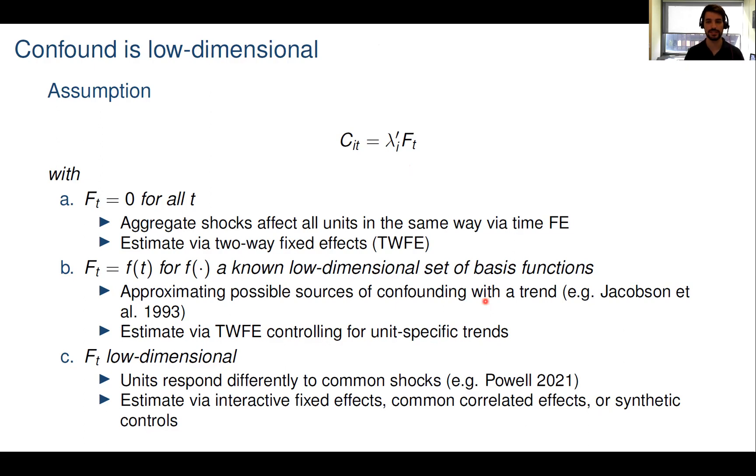Now in case B, we relax this condition and allow the aggregate factors to affect different units differently. But instead, we require the factors to have a known functional form. For example, we may assume that they follow a linear trend. In that case, we can estimate our linear panel model by adding unit-specific linear trends to the estimated equation.